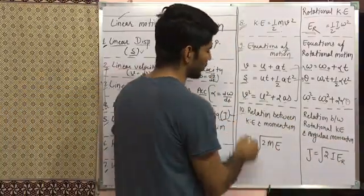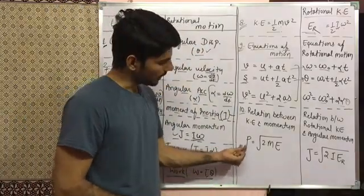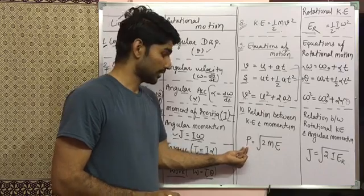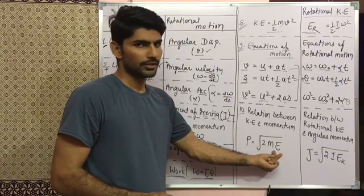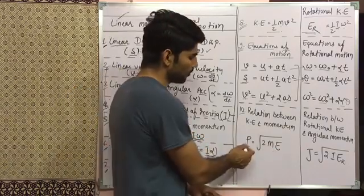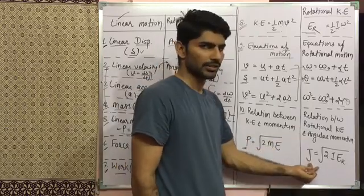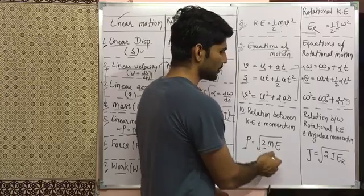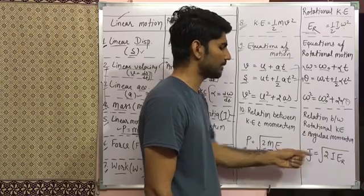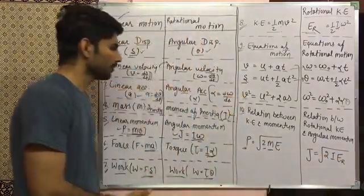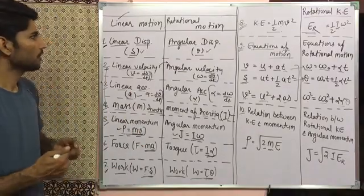The last comparison point is the relation between kinetic energy and momentum. In linear motion, momentum P = √(2mE), where E is kinetic energy. In rotational motion, linear momentum P is converted to angular momentum J, mass is converted to moment of inertia, and kinetic energy is converted to rotational kinetic energy. So J = √(2I·Er).